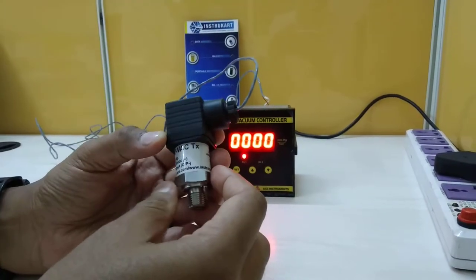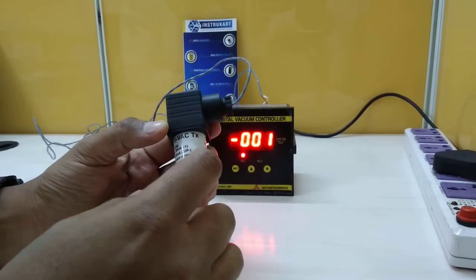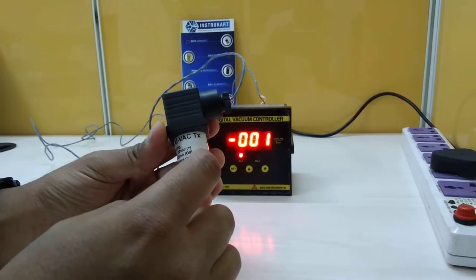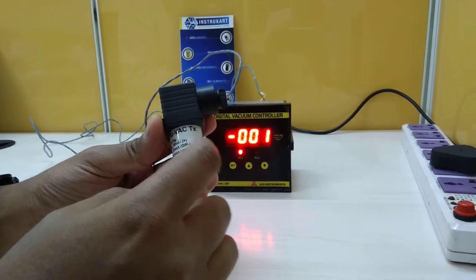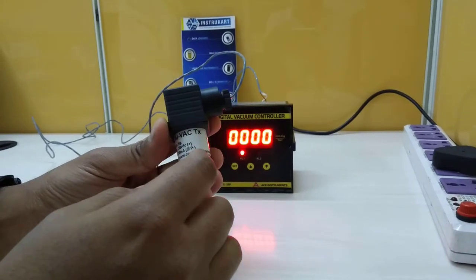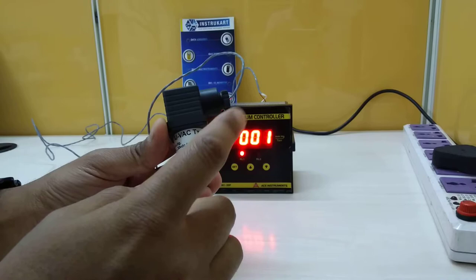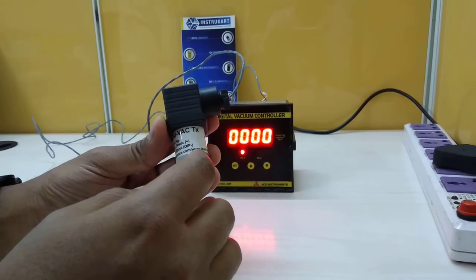First we will talk about this. This is a transmitter which comes in two different models. One model is 0 to minus 760 mmHg, which is this one, and the other model comes with 0 to 760 Tor.